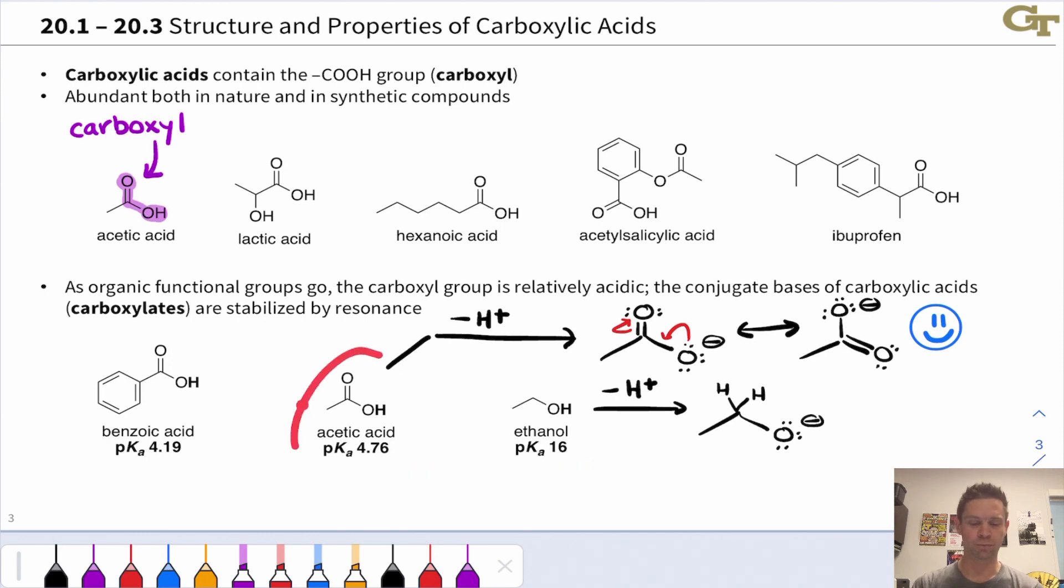This is a stabilizing factor in the carboxylate anion, stabilizing to the tune of about 12 pKa units, 12 orders of magnitude more acidic for acetic acid relative to ethanol. Huge increase in acidity as a result of the electron withdrawing carbonyl group in conjugation with the OH group.